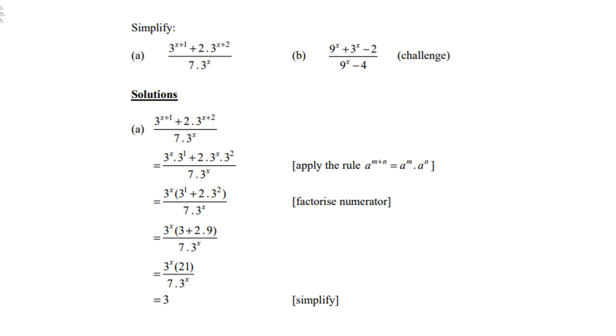Let's simplify number A. 3 to the power x plus 1 plus 2 times 3 to the power x plus 2 over 7 times 3 to the power x.